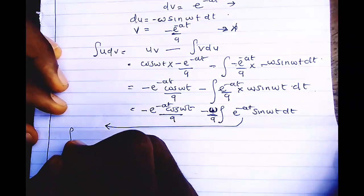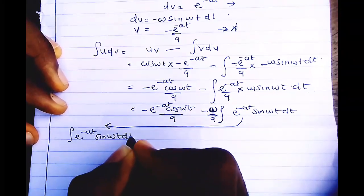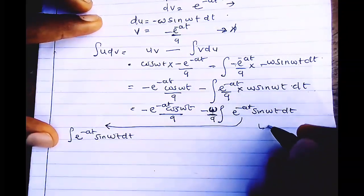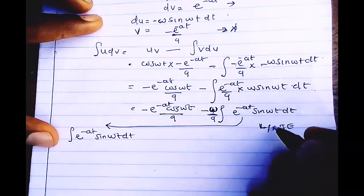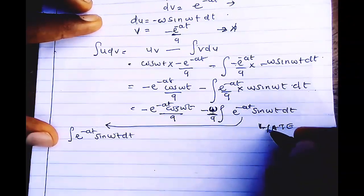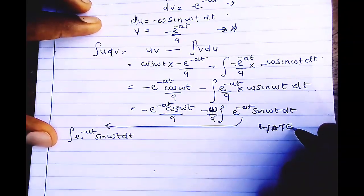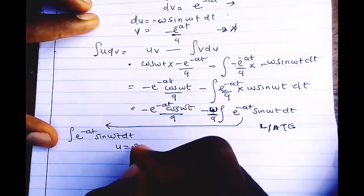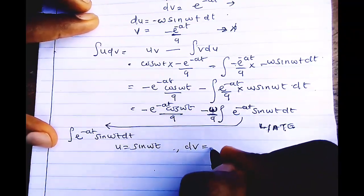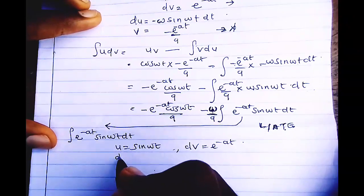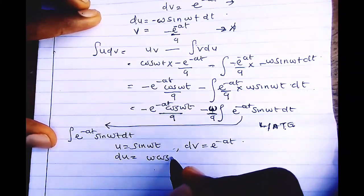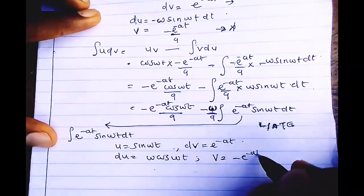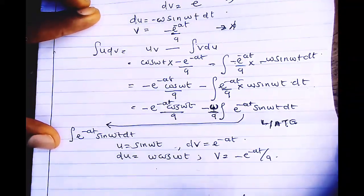We integrate ∫e^(-at) sin(ωt) dt using integration by parts again. Using LIATE, trigonometric comes before exponential, so u = sin(ωt) and dv = e^(-at) dt. Differentiating u gives du = ω cos(ωt) dt, and integrating dv gives v = -e^(-at)/a — the same as before.